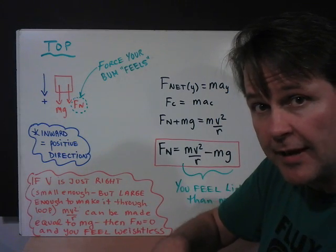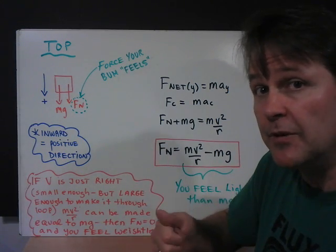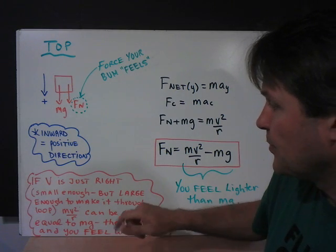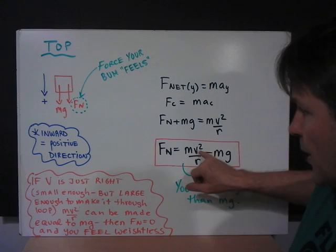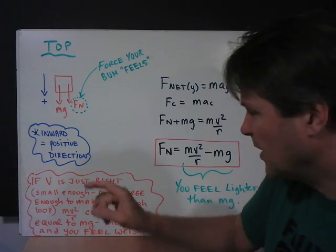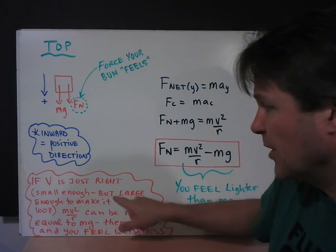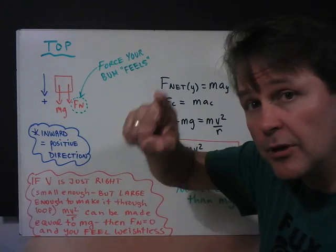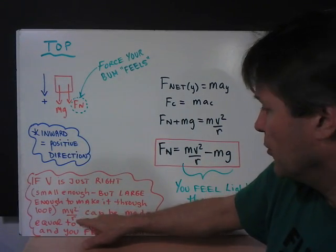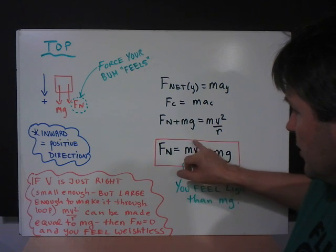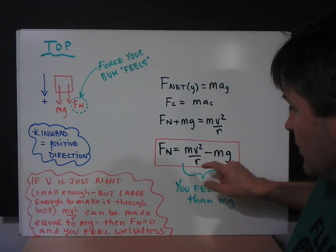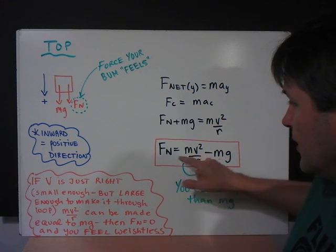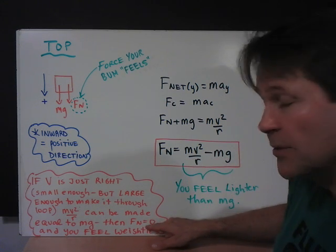At the bottom of the loop, you feel heavier. At the top of the loop, you'll feel lighter than normal. So if the velocity in this part of the equation is just right, in other words, if it's small enough but large enough to make it through the loop, mv squared over r, this part of the equation, can be made equal to this part of the equation. If these are equal to one another, that means Fn is going to be equal to zero.